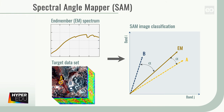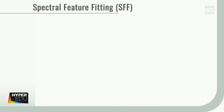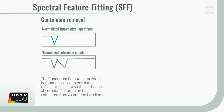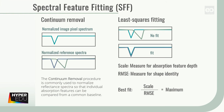End member spectra can be taken from spectral libraries or extracted directly from the image. Another commonly used technique is the spectral feature fitting, or SFF. It measures the similarity of absorption features between image spectra and reference spectra. For that, the continuum is removed from both data sets in a first step. Next, the reference spectra are fitted to each image spectrum considering a scale factor within a least squares estimation. The similarity is then evaluated based on the different scale values and root mean square errors, or RMSE. A high scale and low error indicate the best fit of a reference spectrum to an image spectrum.